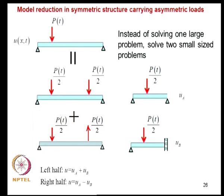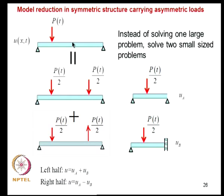If the symmetric structure is loaded asymmetrically, this is not a problem. For example, a simply supported beam loaded asymmetrically by a force P(t) can be decomposed into two problems: a symmetric loading problem and an anti-symmetric loading problem. Adding these two gives the solution for the original asymmetric problem, and each can be handled by the half-model approach. This demonstrates that symmetry can be exploited even under asymmetric loading.